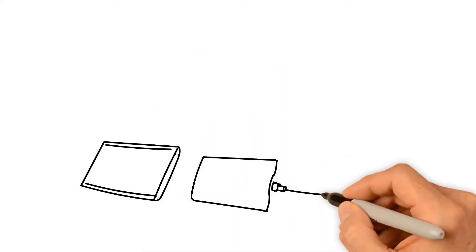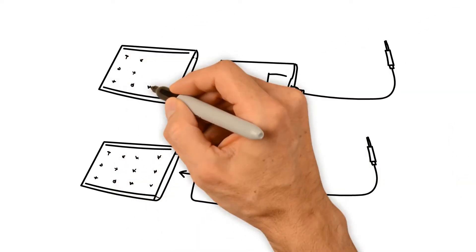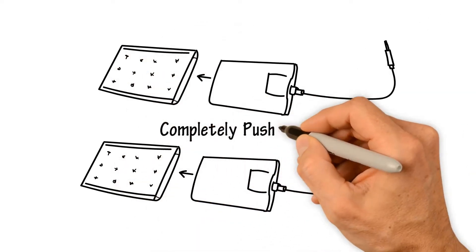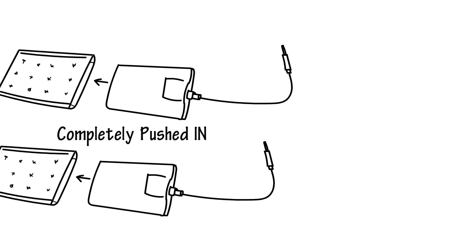Take each of the axillary electrodes and insert them into the sponge pad sleeves. Make sure they are completely pushed in.